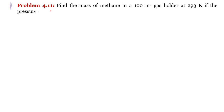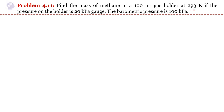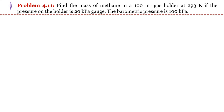Problem number 4.11: find the mass of methane in a 100 meter cube gas holder at 293 Kelvin if the pressure on the holder is 20 kilo Pascal gauge and the barometric pressure is 100 kilo Pascal. In this case the gauge pressure is given, so first we need to estimate the absolute pressure.